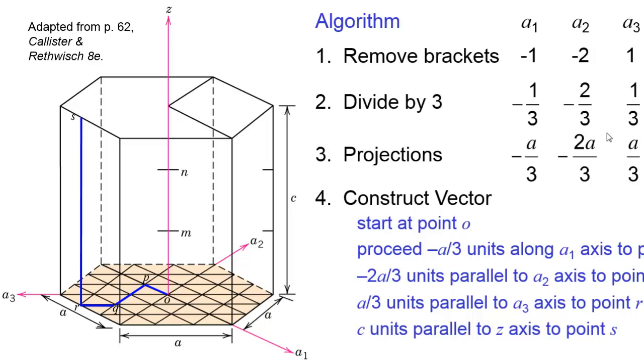Then for our A3 direction, we only go one third and we go in the positive A3 direction. This is also a little disconcerting because usually to the left is negative, but not so in an HCP. This direction is positive, so we go positive one third over to this point R. And then for our vector in the Z direction, we go up a single C. So it goes all the way up to this point they labeled S.